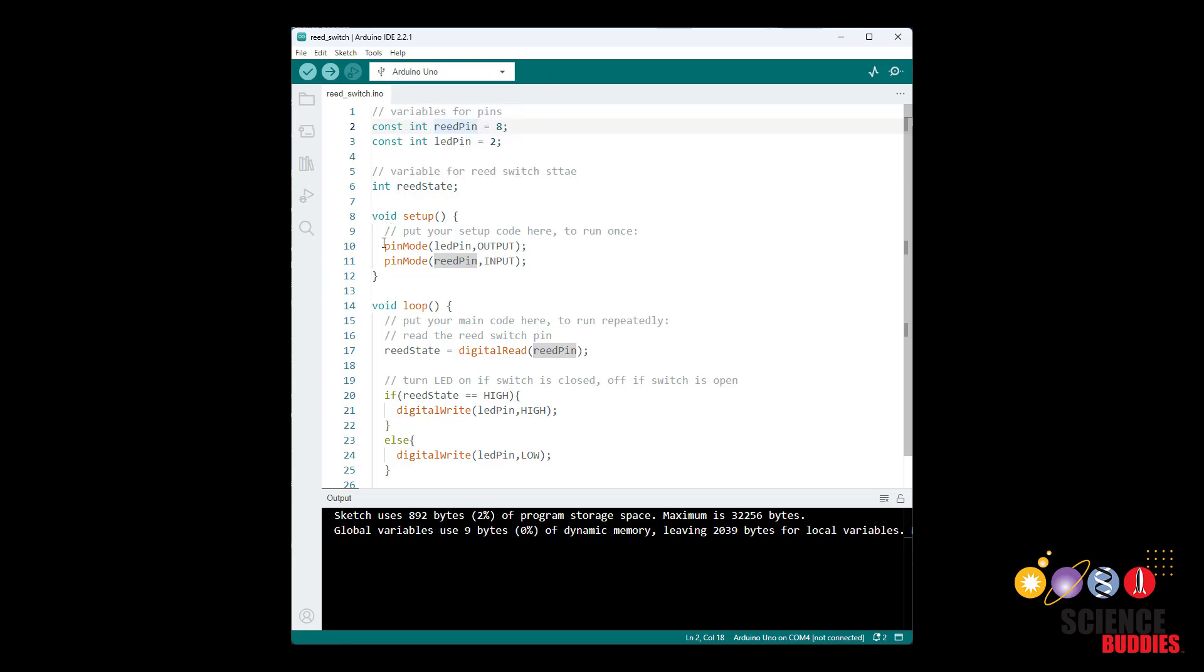And in my setup function, I use the pin mode command to set the LED pin as an output and the reed switch pin as an input. In my loop function, I then use the digital read command to read the state of the sensor pin and store that in the reed state variable.